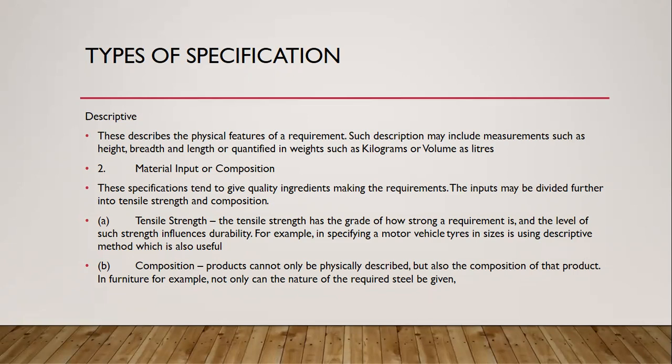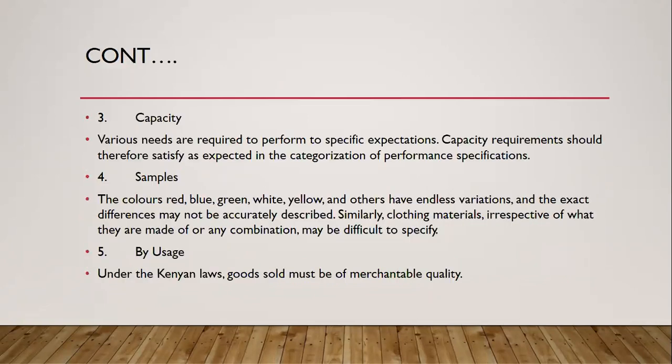For example, when you're buying a motor vehicle, you also need to check on the size of the tires. The other important thing is the composition — the product can not only be physically described, but you also check the composition that ensures you are able to come up with that product successfully. Here you check the nature of the material you are going to use when coming up with the specification. You also need to consider capacity, where various requirements need to perform to a specific task.